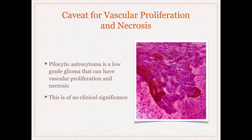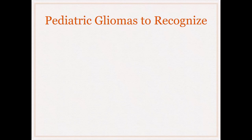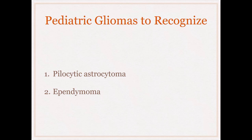An important caveat: pilocytic astrocytoma, the most common glioma in children, can have both vascular proliferation and necrosis and still be a grade one tumor. So if you're looking at a pediatric brain tumor in the posterior fossa and see vascular proliferation and necrosis, before making a diagnosis of high-grade glioma, make sure you're not dealing with a pilocytic astrocytoma. For adult brain tumors, you're essentially establishing a diagnosis of glioma and determining whether it's high-grade or low-grade.